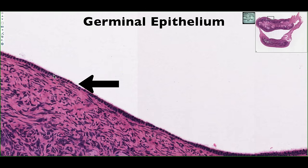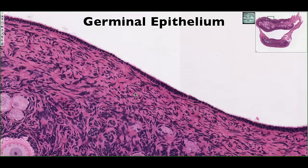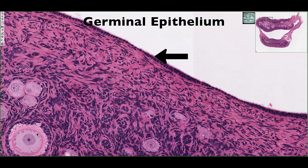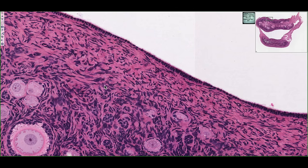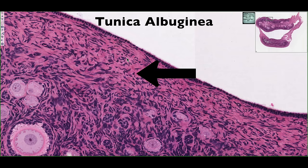This is our germinal epithelium, and it gets its name from early histologists who thought the germ cells — essentially the oocytes — were derived from this cell layer. But this is actually not the case. We know that the germinal epithelium is essentially our peritoneum that is continuous with the broad ligament. The mesovarium is continuous with this layer of cells because it covers the entire surface of the ovary. And just deep to the germinal epithelium, we'll see a layer of dense irregular connective tissue — this is the tunica albuginea, similar to what we saw in the male testes.